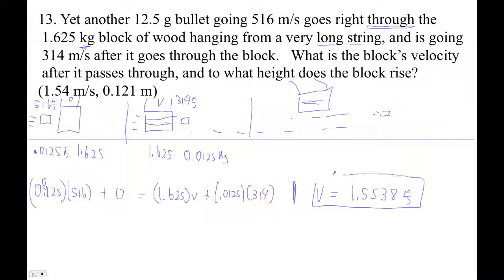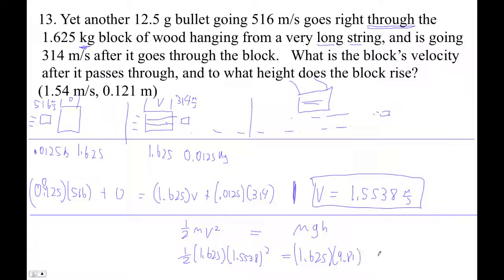Okay, so that's the first answer. What's the speed of the block after the bullet's gone through it? And then the next question is, how high does the block swing? So for that, I'm going to use kinetic energy here becomes potential energy there. So 1.625, remember it's just the block because the bullet goes through the block.